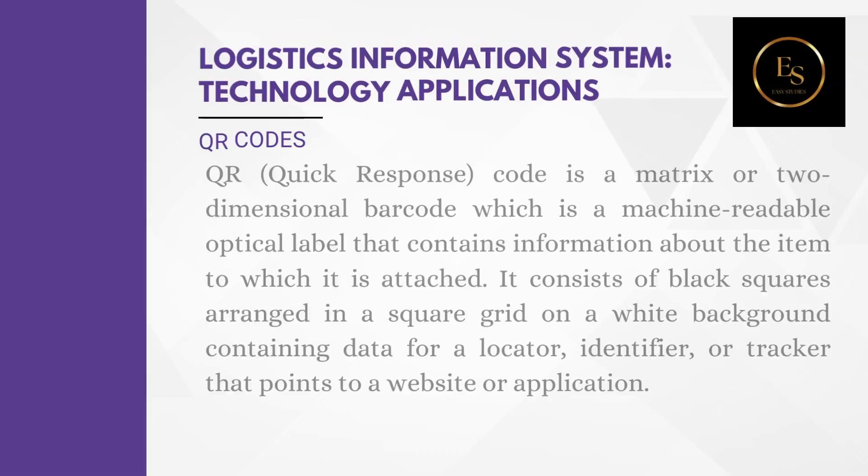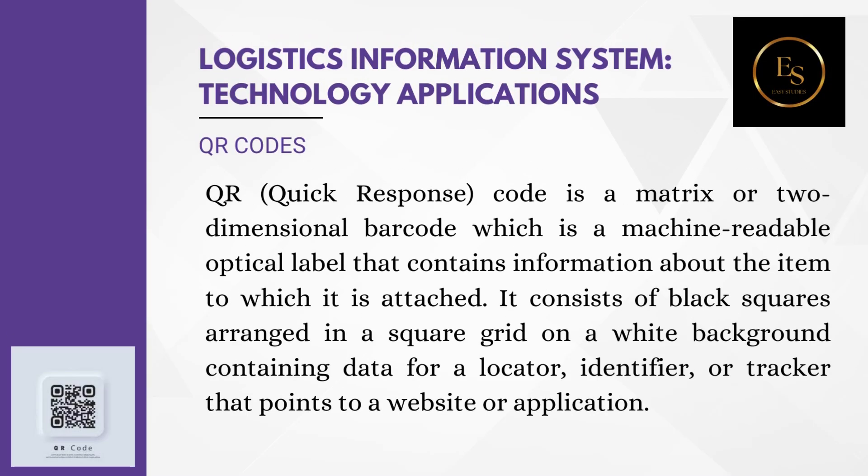QR Quick Response Code is a matrix or two-dimensional barcode, which is a machine-readable optical label that contains information about the item to which it is attached. It consists of black squares arranged in a square grid on a white background containing data for a locator.